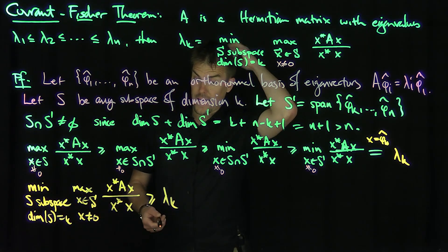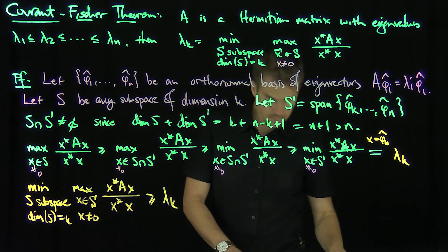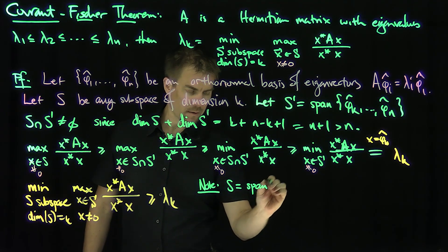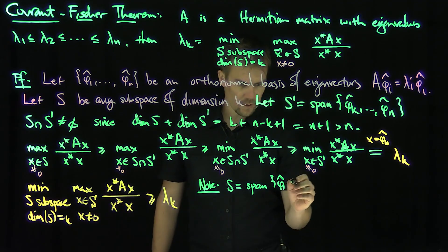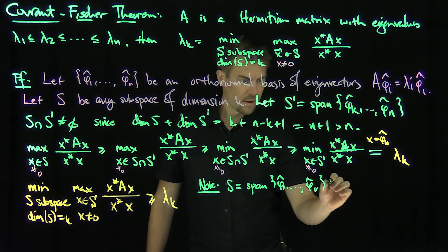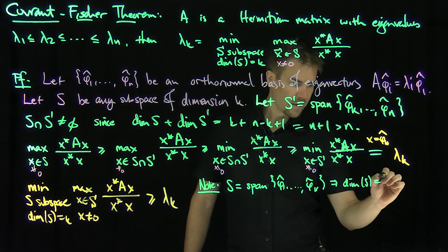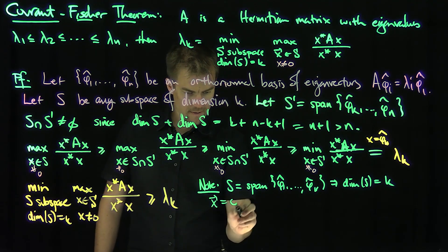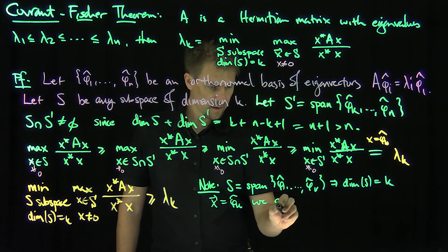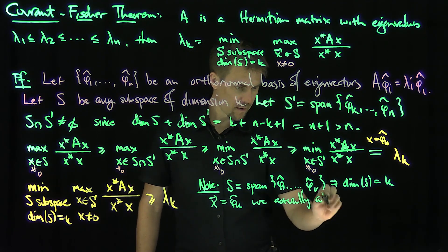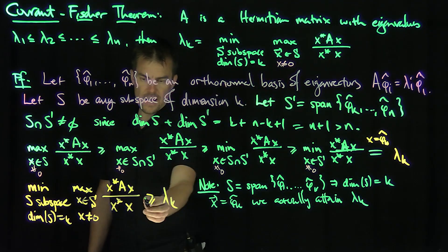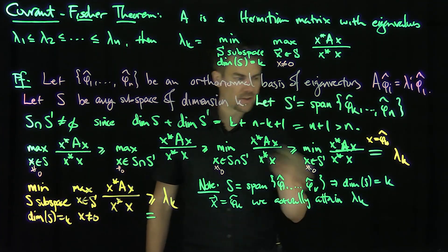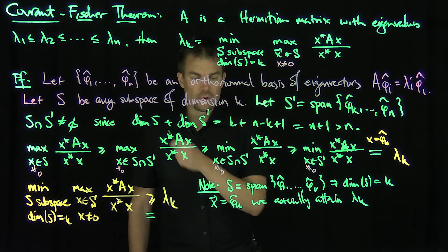And how do I show that it actually attains λₖ? So note, if I choose S just to be the span of φ₁ through φₖ, then that implies the dimension of S is equal to k. And if I choose this for my subspace and plug in again by the same trick, plug in x = φₖ, we actually attain λₖ. So in fact, not only is it ≥ λₖ, it's actually equal to λₖ because I can attain that by choosing this to be my subspace of dimension k and this to be my choice of unit vector φₖ.